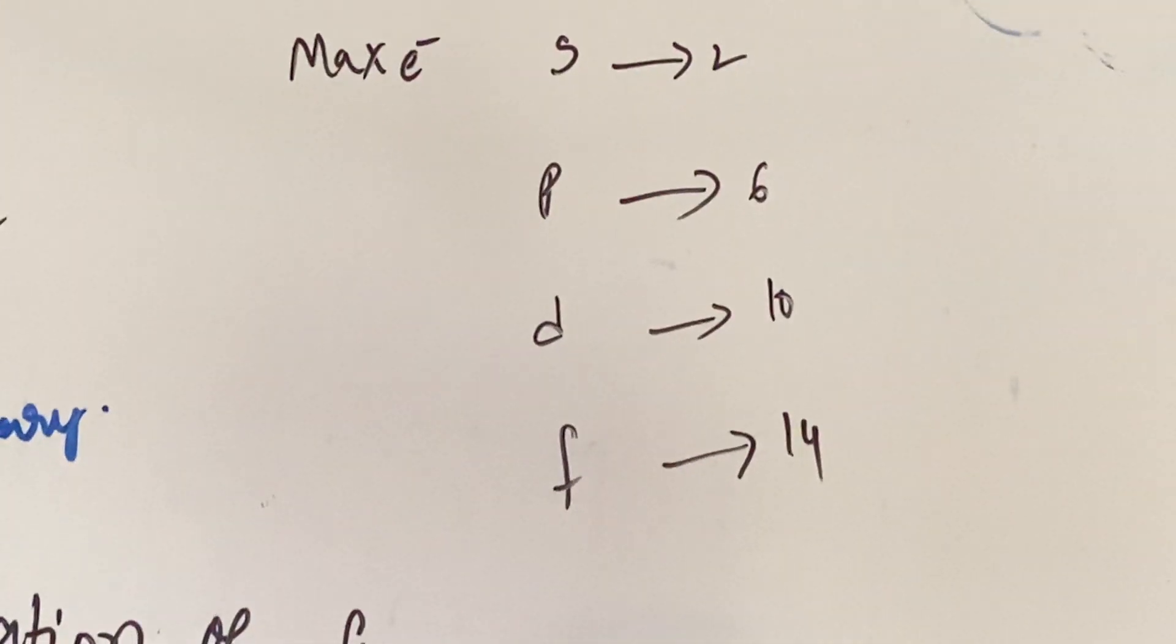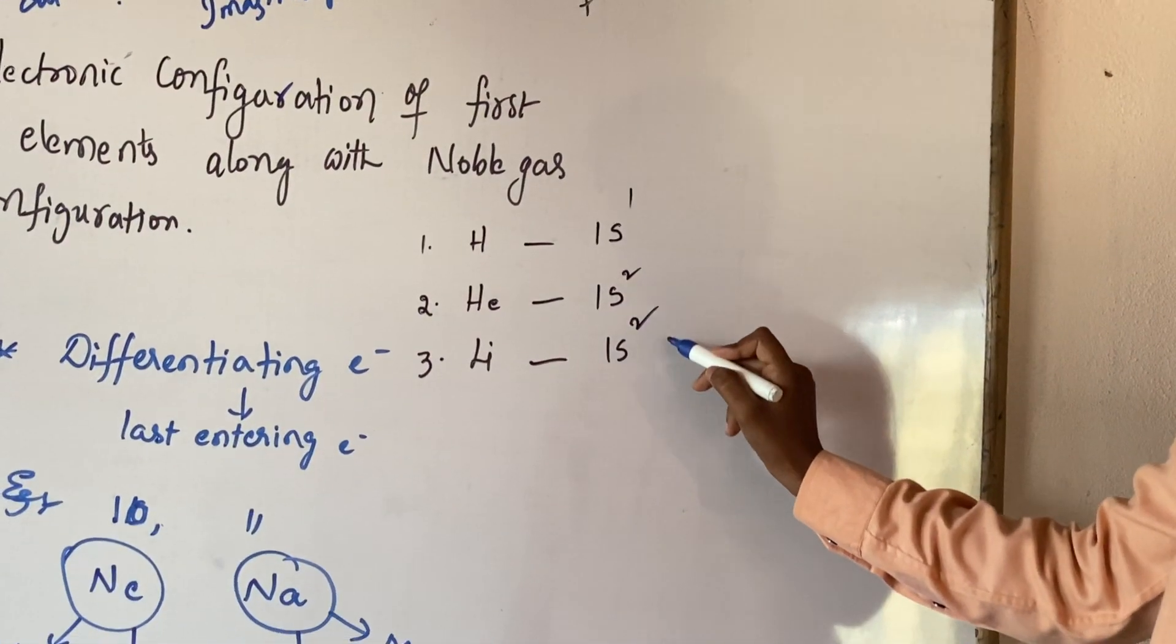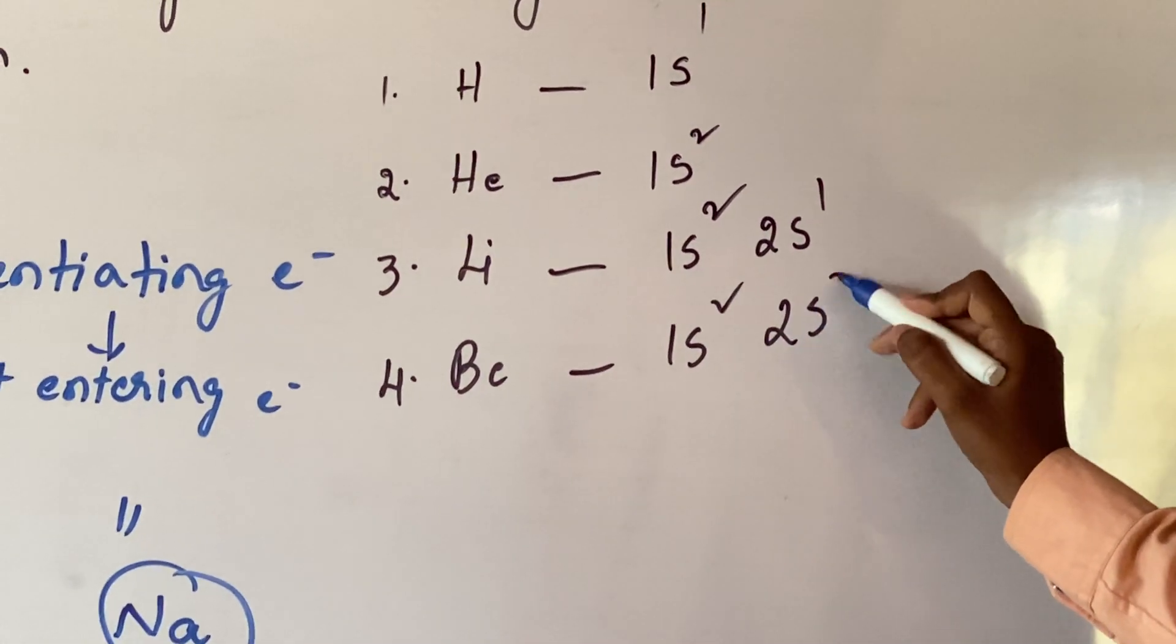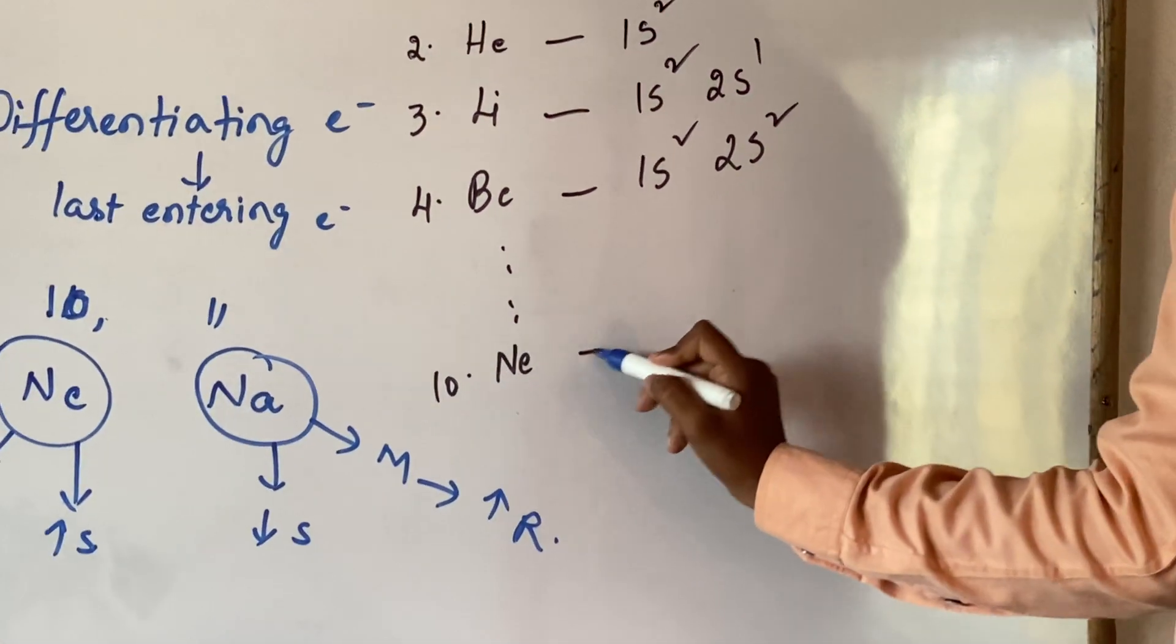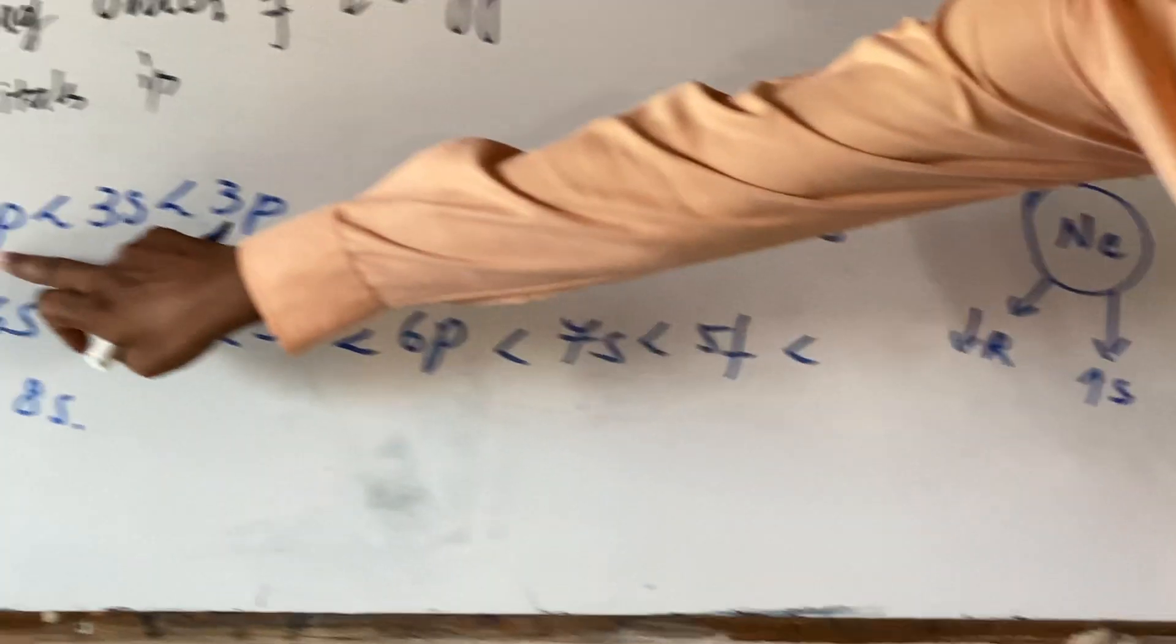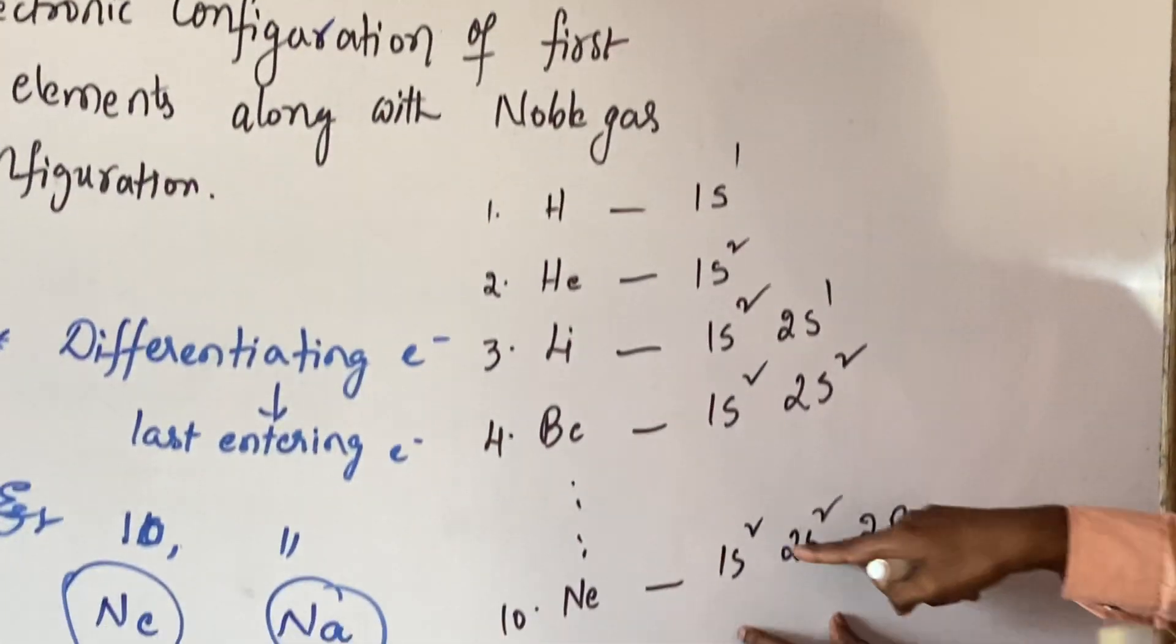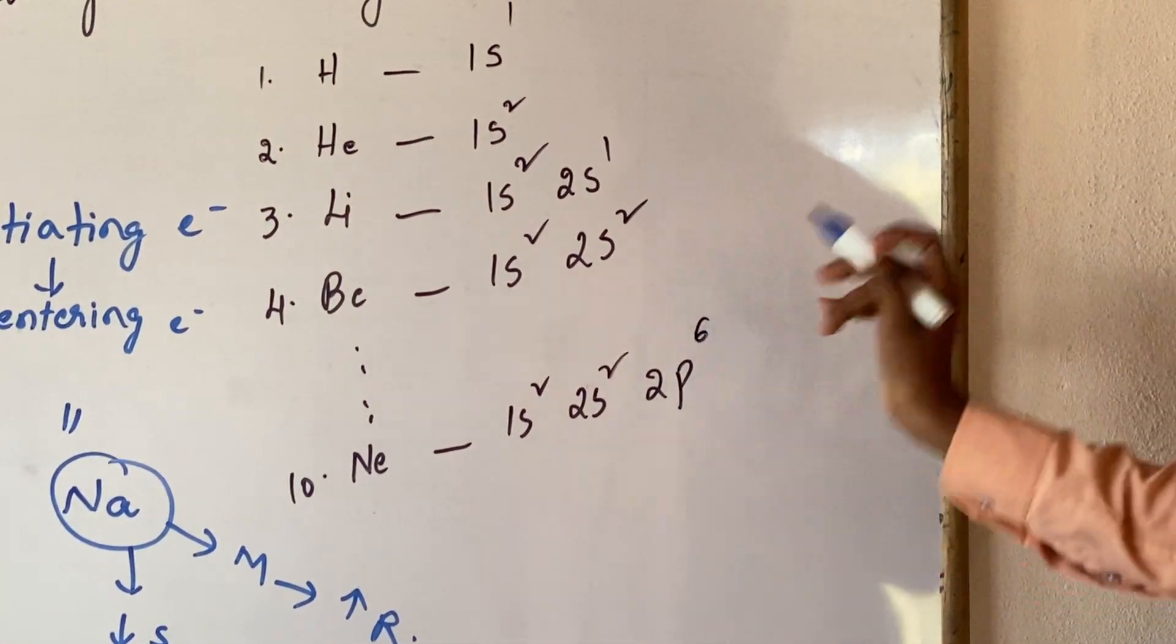Now, similarly, for lithium, the first electron, 1s1, second electron, 1s2, third electron, 2s1. Now, fourth one is beryllium, 1s2, and 2s2. Like that we can write, up to the tenth one, that is, neon, 1s2, 2s2, 2p. 2s after, 2p, and the P electron can have maximum electrons, 6. Now, here availability of electrons, 2 plus 2, 4, 10 minus 4, 6. The remaining 6 electrons can enter into 2p orbital.